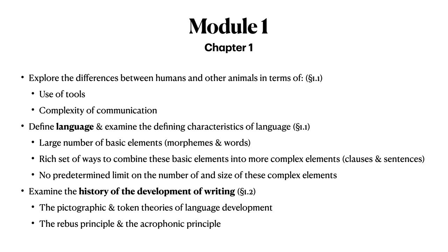In Section 1.2, we will examine the history of the development of writing. We will examine two theories of language development — the pictographic theory and the token theory — and two principles involved in early writing systems: the rebus principle and the acrophonic principle.